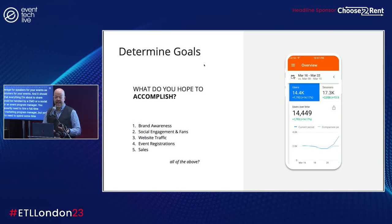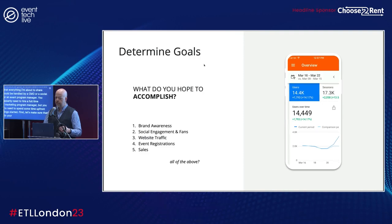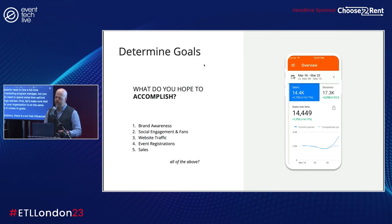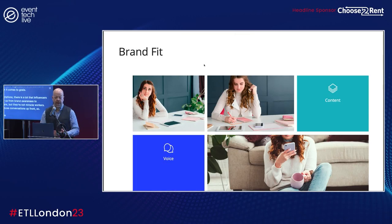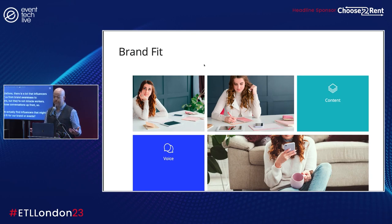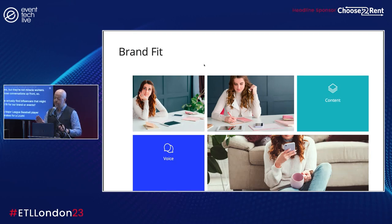First, let's make sure that everyone in your organization is on the same page when it comes to goals and expectations. There is a lot that influencers can do for us — from brand awareness to registrations — but they're not miracle workers, so have those conversations upfront. How do we actually find influencers that might be a great fit for our brand or events? Just like a major league baseball player probably makes for a lousy fountain pen spokesman, most influencers will be a poor fit for your brand or event.